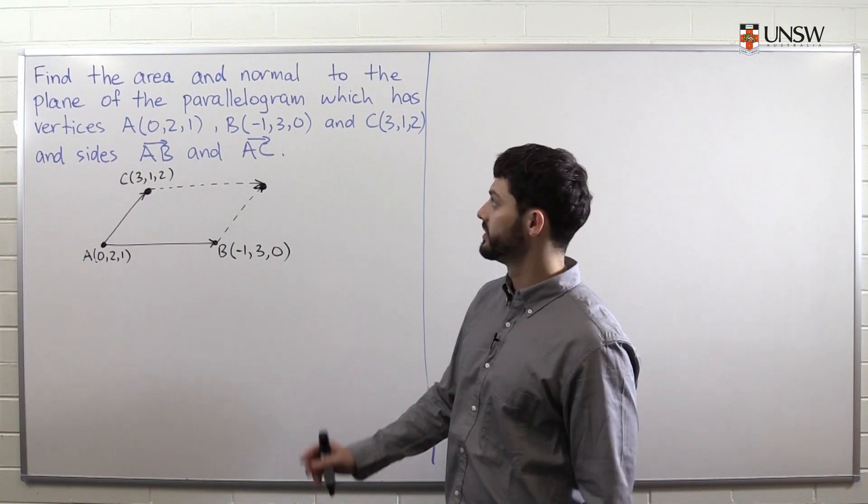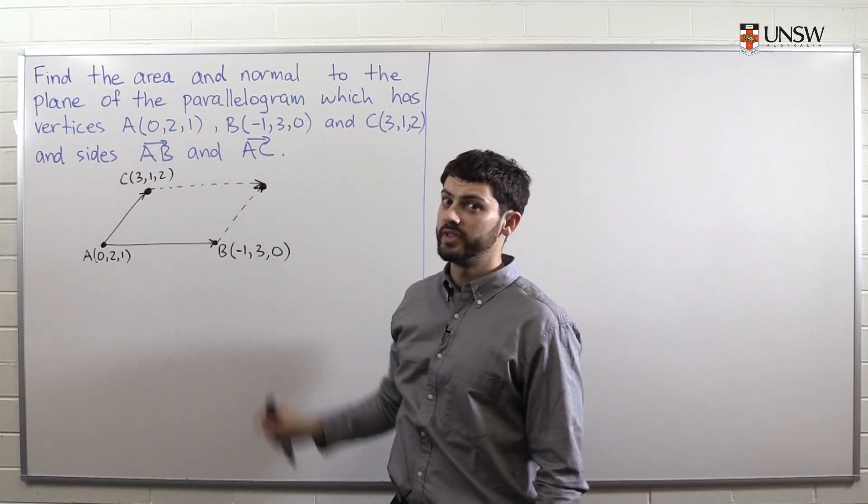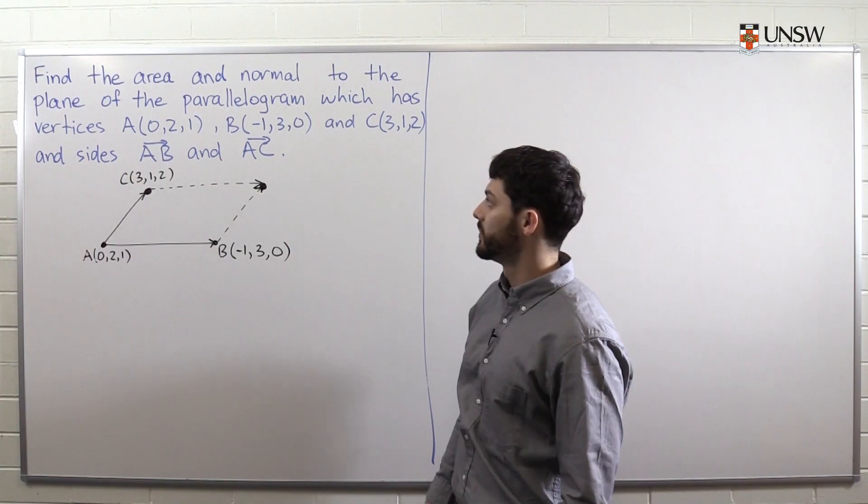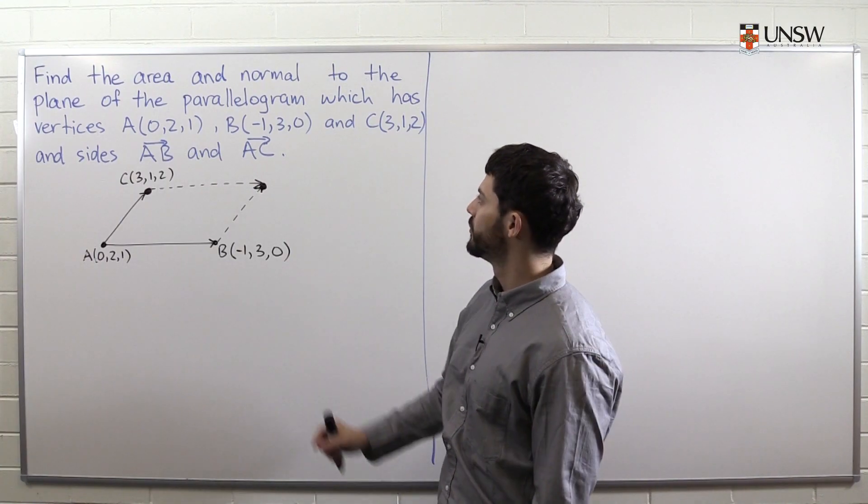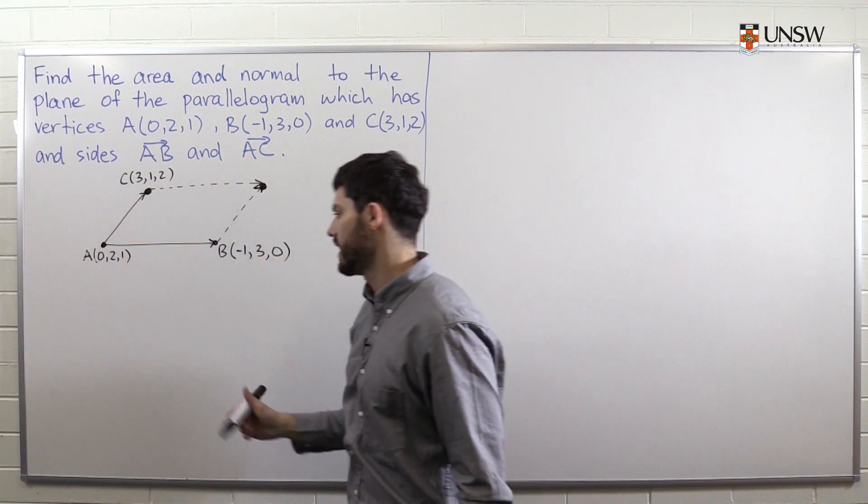Okay, so this is a two-part question. We need to find both the area and normal. We will first find the normal, and then we'll see that it's only one extra small step to find the area of this parallelogram. So before I show you how to find the normal, let's begin by finding the vectors AB and AC.